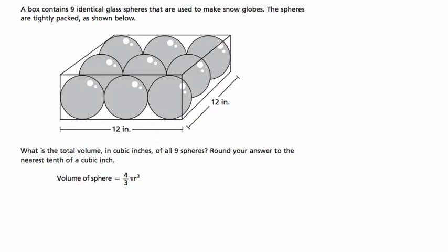Let's start by reading it together. It says that a box contains nine identical glass spheres that are used to make snow globes, and the spheres are tightly packed as shown below. So we have these glass spheres inside what looks like a box, and they want to know what is the total volume in cubic inches of all nine spheres. Round your answer to the nearest tenth of a cubic inch.